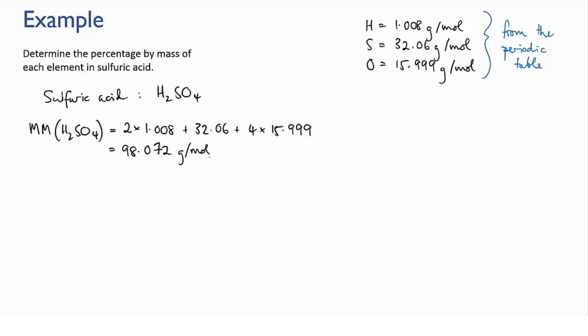Now we can calculate the percentages by mass. So the percentage of hydrogen equals the mass of hydrogen over the total mass of sulfuric acid times 100 and there are two hydrogen atoms in each molecule of sulfuric acid. So that means that if you have one mole of sulfuric acid there will be two moles of hydrogen atoms contained in it. So the mass of hydrogen in our mole of sulfuric acid equals 2 times 1.008 grams divided by the molar mass of sulfuric acid 98.072 times 100 and that gives us 2.056%.